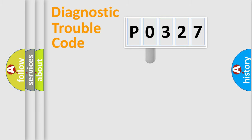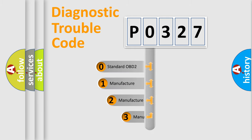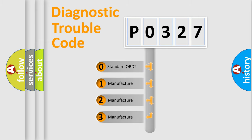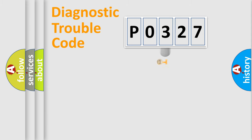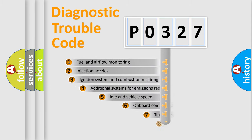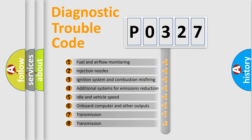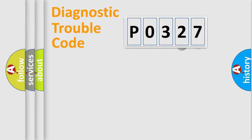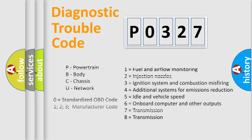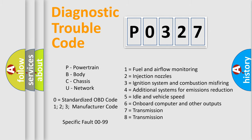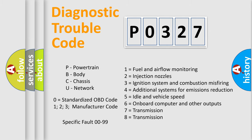This distribution is defined in the first character of the code. If the second character is expressed as zero, it is a standardized error. In the case of numbers 1, 2, or 3, it is a manufacturer-specific error. The third character specifies a subset of errors. This distribution is valid only for the standardized DTC code, and only the last two characters define the specific fault of the group.